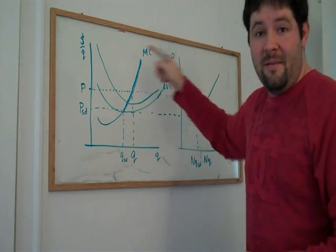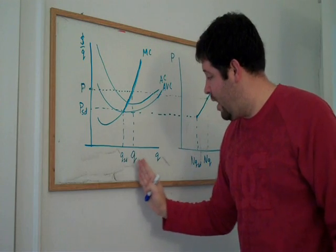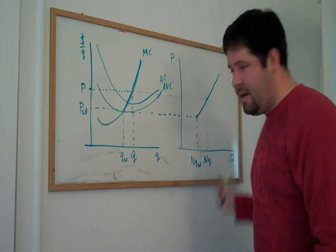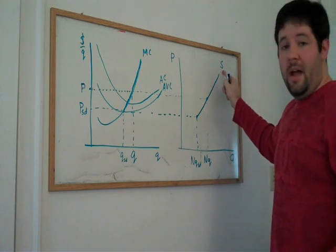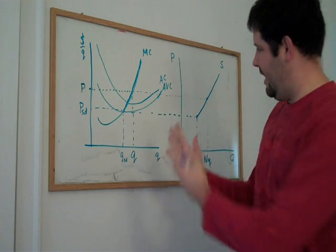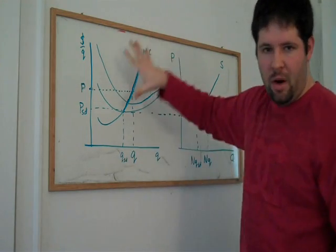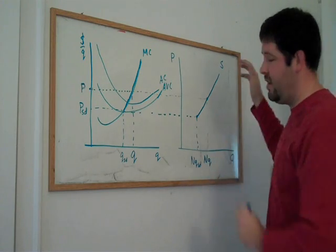Because we have N firms or 10,000 firms, we're able to multiply this quantity by the number of firms, and we get the industry quantity. So we get our supply curve for the industry. So that's how you go from a graph like this, where we just have one firm, to a graph like this, where we have many firms, to an industry.